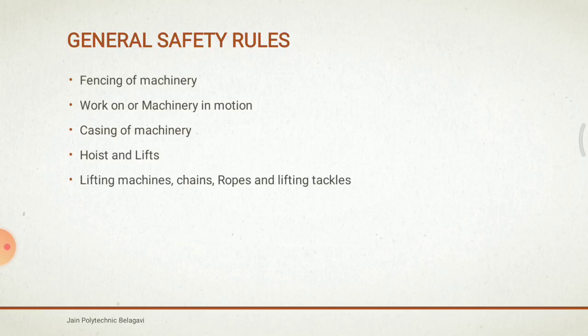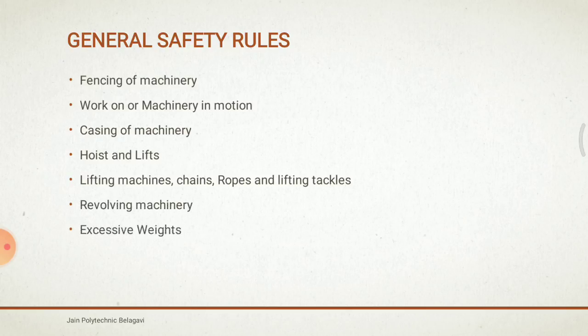Lifting machines, chains, ropes, and lifting tackles: all parts including working gear, lifting machines, chains, ropes, or lifting tackles shall be in good condition and of adequate strength. They must be properly maintained and thoroughly examined at least once every 12 months. Lifting machine means a crane, crab, winch, pulley, block, etc. Revolving machinery: a notice shall be fixed to every grinder indicating the maximum safe working peripheral speed of every grindstone or abrasive wheel, and the speed of the shaft or spindle upon which the wheel is mounted.